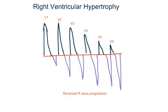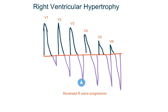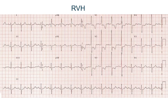In right ventricular hypertrophy, the R wave progression is reversed. That is, the R wave is tall in V1 and V2 and then starts decreasing in length up to V6. If you look at the ECG, the R wave is tall in V1, V2, V3 and then it starts decreasing — V4, V5 — and it's very tiny in V6.